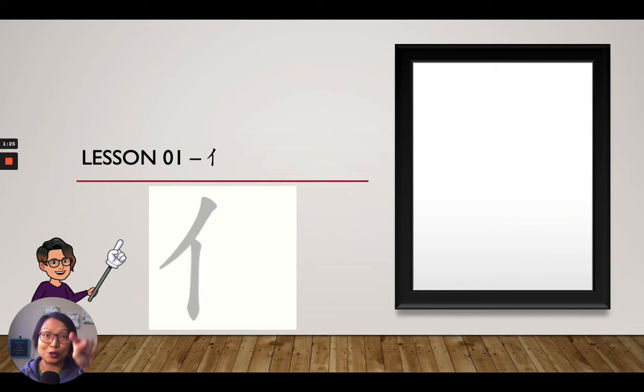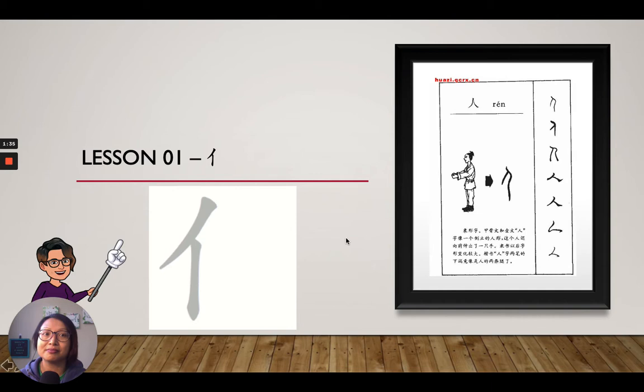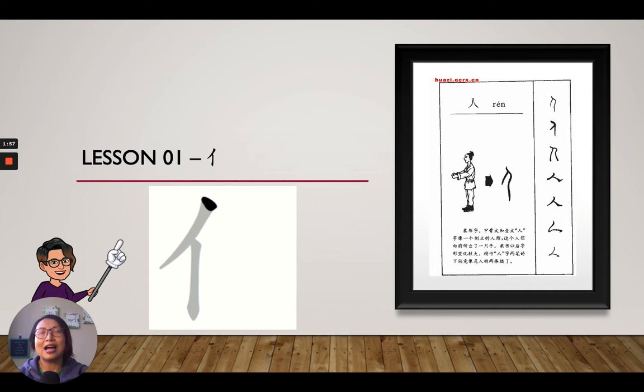撇, 樹 — that's how we write the radical. But what does that mean? 站人邊 is actually a form of 人, a person. This right here is the very original form of the word 人. Does it look like a person standing with the hands coming out? The word actually shows a person extending the hand out.